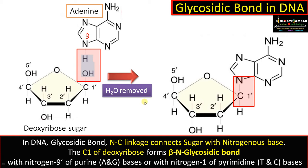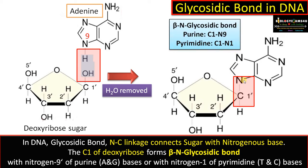A water molecule is removed, therefore this reaction is also called a dehydration condensation reaction. This bond is called the beta-N glycosidic bond. As you can see, the OH is above the plane.